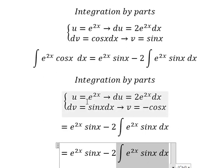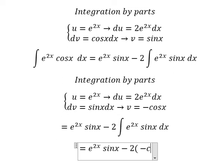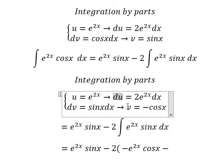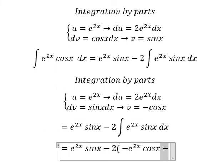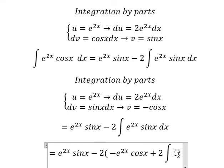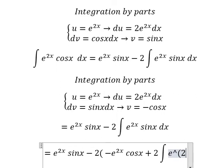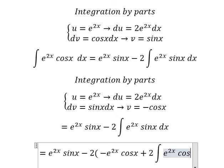So we have u multiplied by v minus du multiplied by v. So because we have the negative sign here, negative with negative, you got positive. And we have number 2, and we have the integration e to the power of 2x cosine x dx.